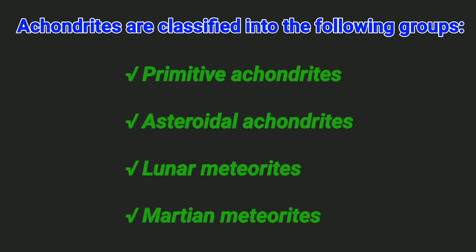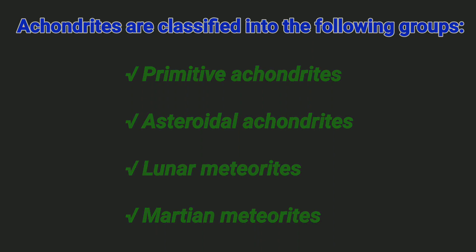Achondrites are classified into the following groups: Primitive Achondrites, Asteroidal Achondrites, Lunar Meteorites, and Martian Meteorites.